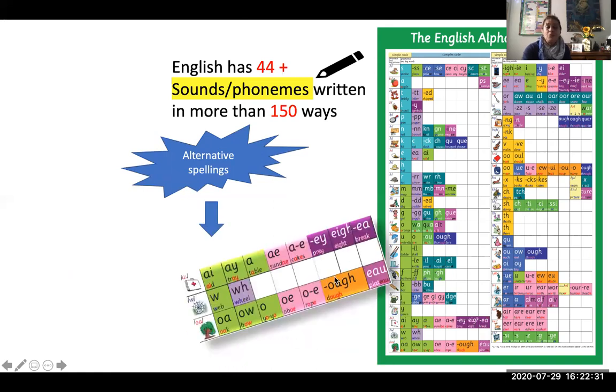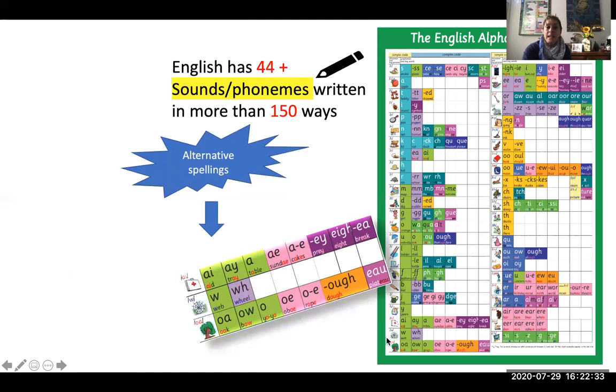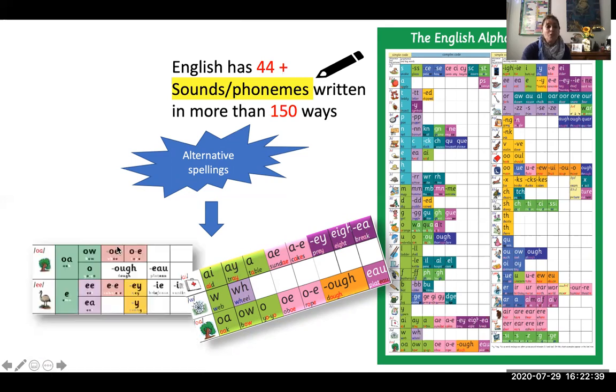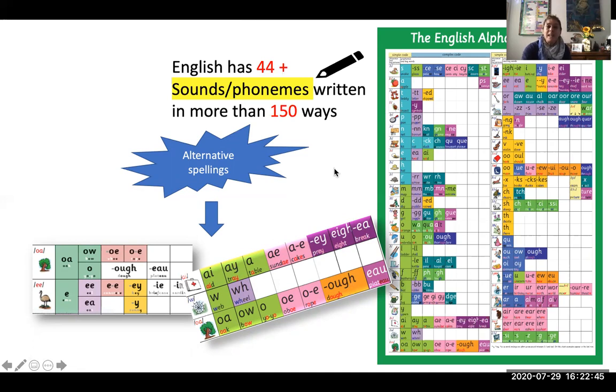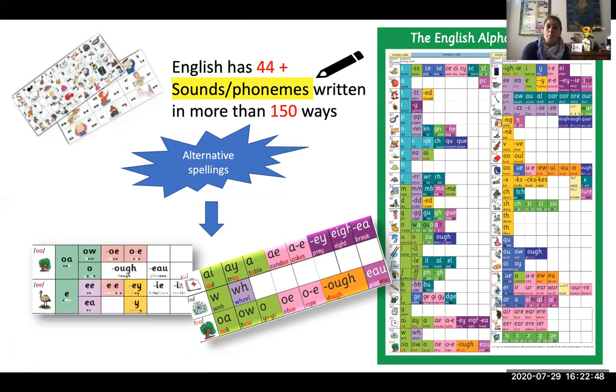So you see that, for example, the sound 'a' can be written in all these ways. Or the sound 'o' can be written in all these ways. So that makes the English alphabetic code a really complex code. It has to be taught in a very defined and clear way and very systematic.